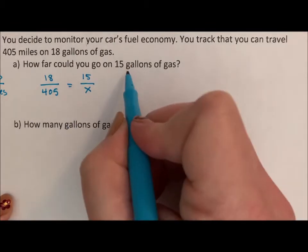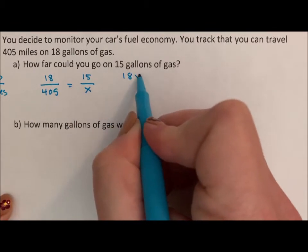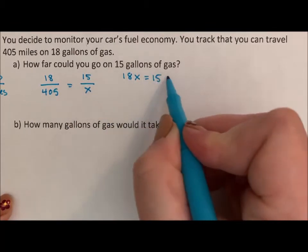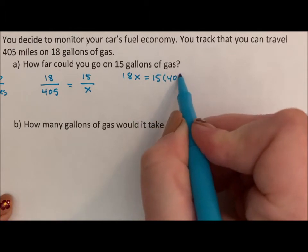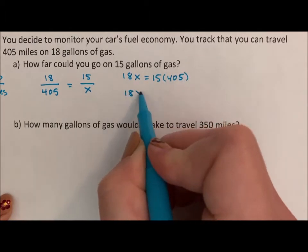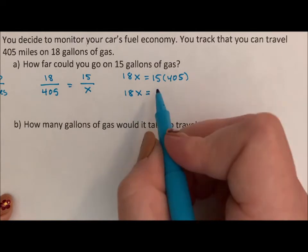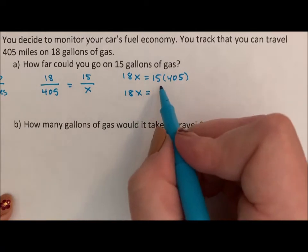I'm going to cross multiply and get 18x equals 15 times 405. So 18x is equal to 6075.